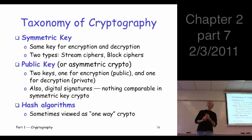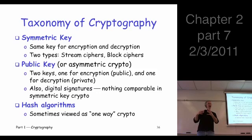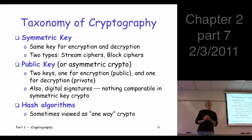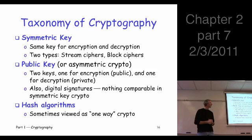The stream cipher can be thought of as a generalization of the one-time pad — just an attempt to make a practical version of the one-time pad. Block ciphers, on the other hand, are a generalization, or a modern incarnation, of codebook ciphers. So it's really the codebook concept in a modern form.